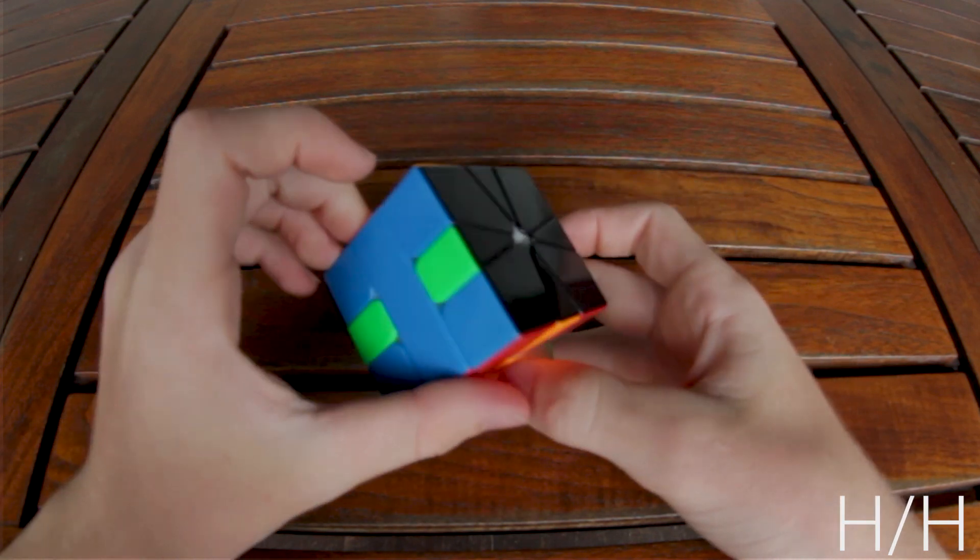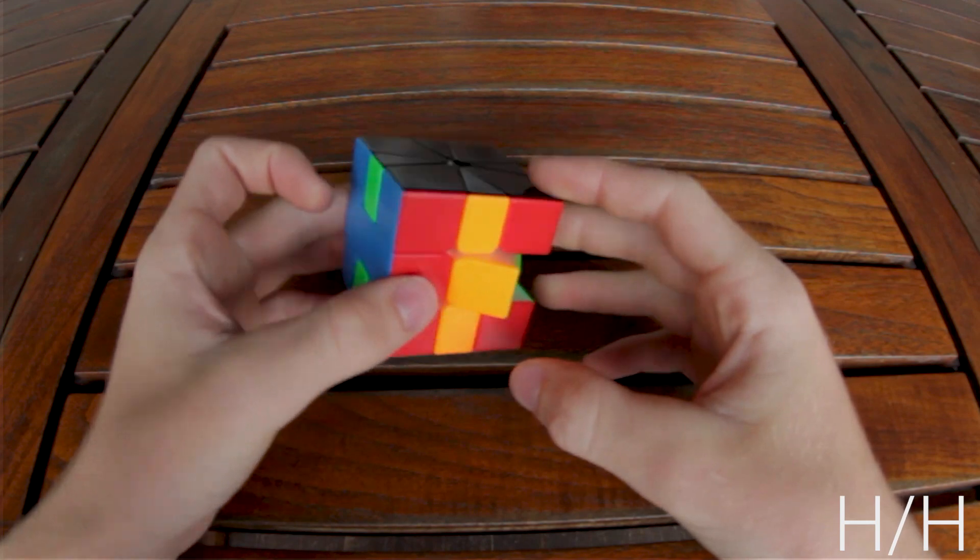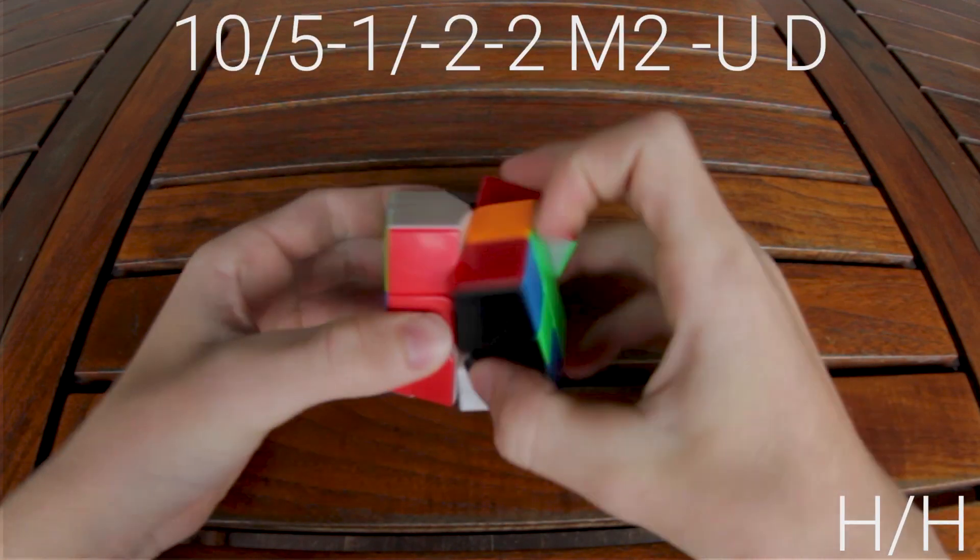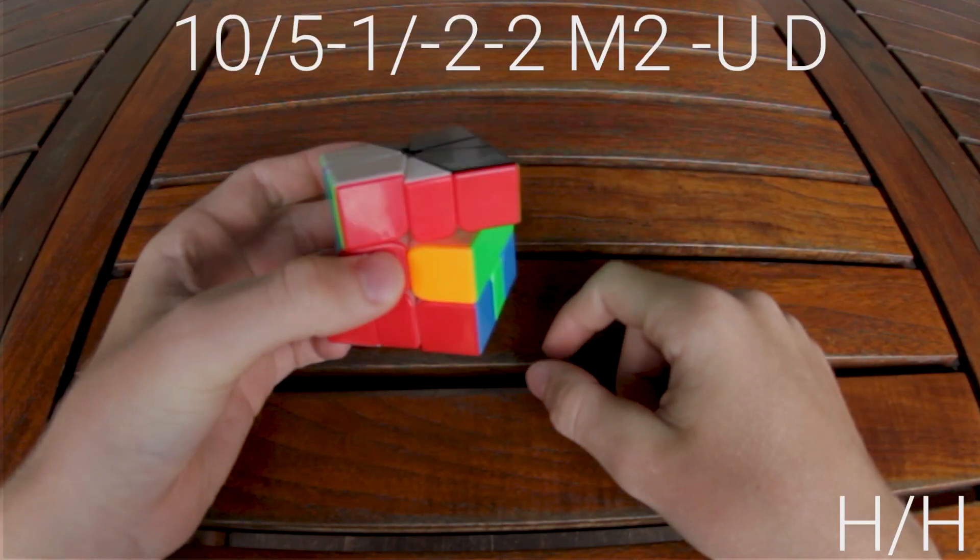When solving H, H, firstly you do the vertical opposite-opposite, and then you cancel into doing the side opposite-opposite.